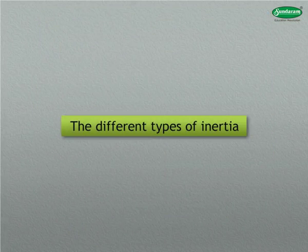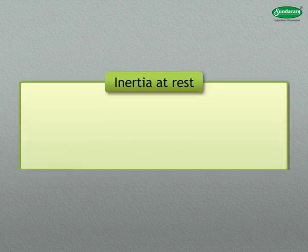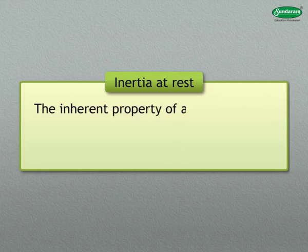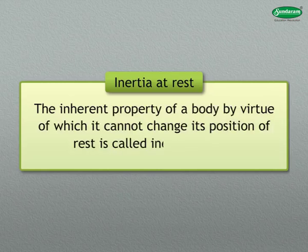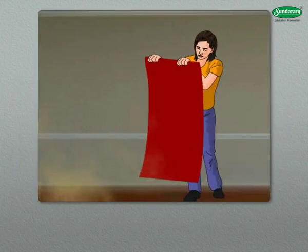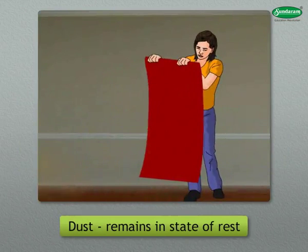Now let us see the different types of inertia. The first type is inertia of rest. The inherent property of a body by virtue of which it cannot change its position of rest is called inertia of rest. For example, when we dust a carpet by lifting it, the carpet is set into motion and the dust remains in its state of rest.